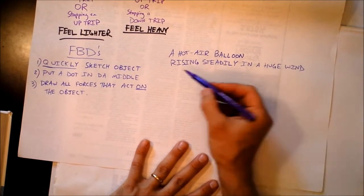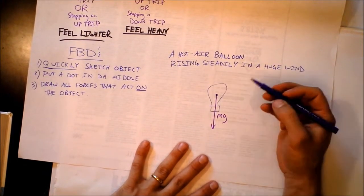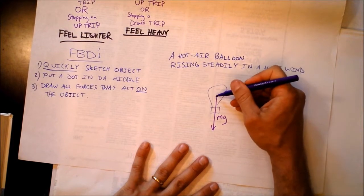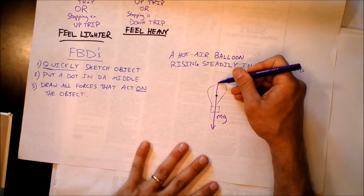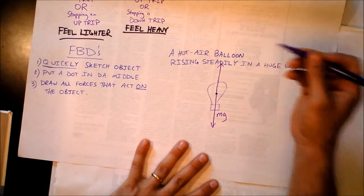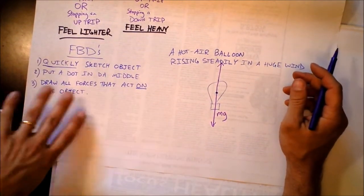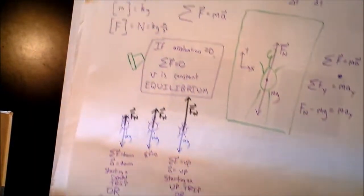The next step is to notice that it says rising steadily. So that gives me a clue as to how big the lift force is, or the buoyant force, on this hot air balloon. It tells me that it's rising steadily, which means it's in equilibrium.